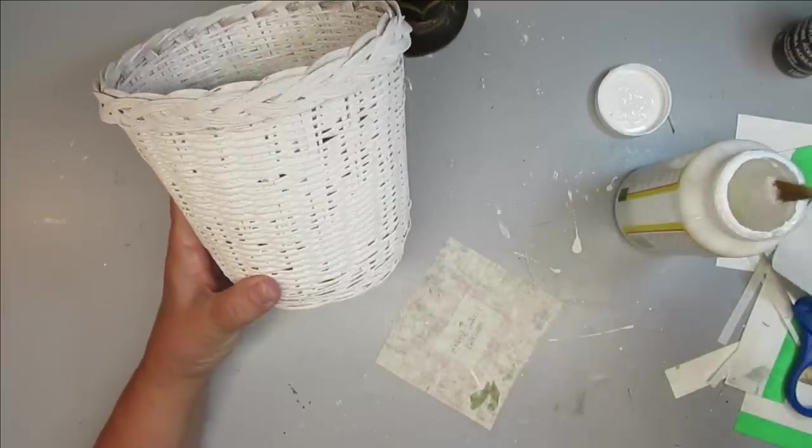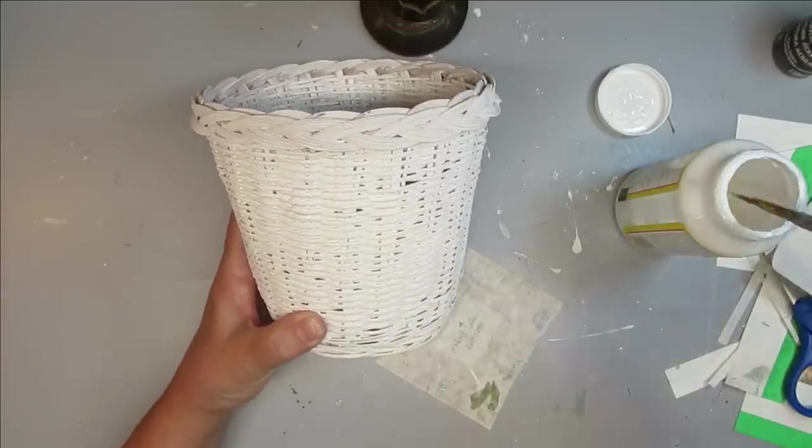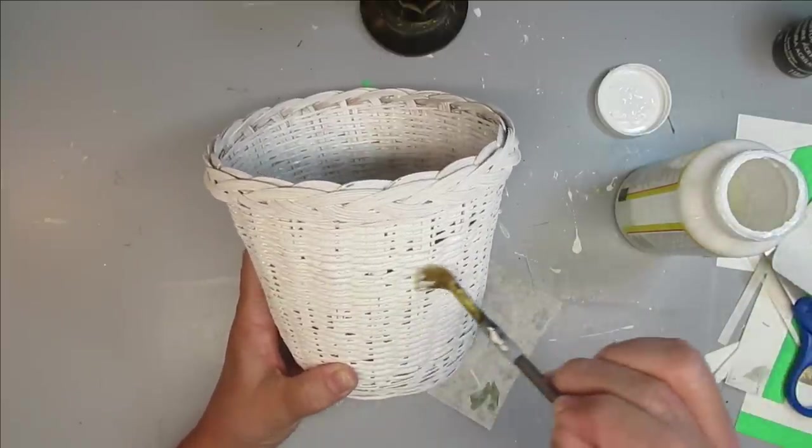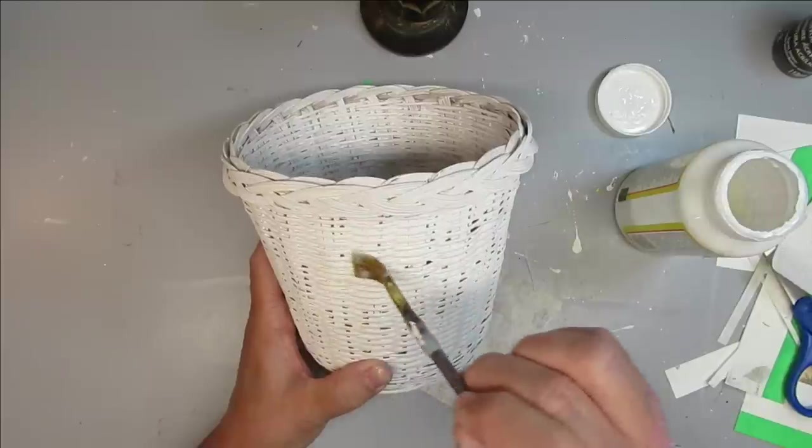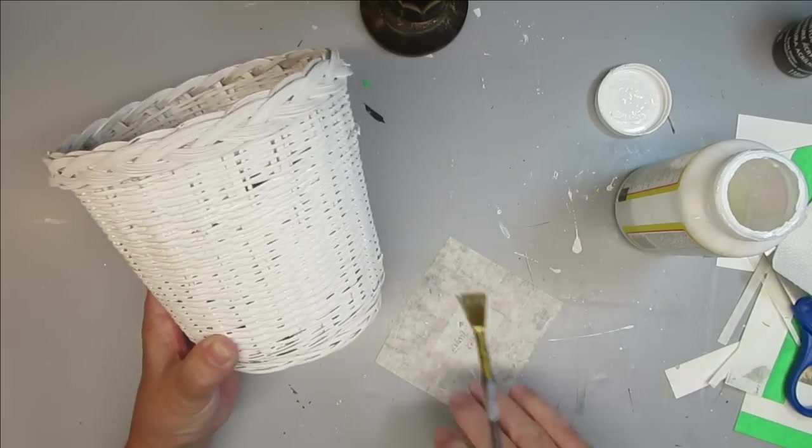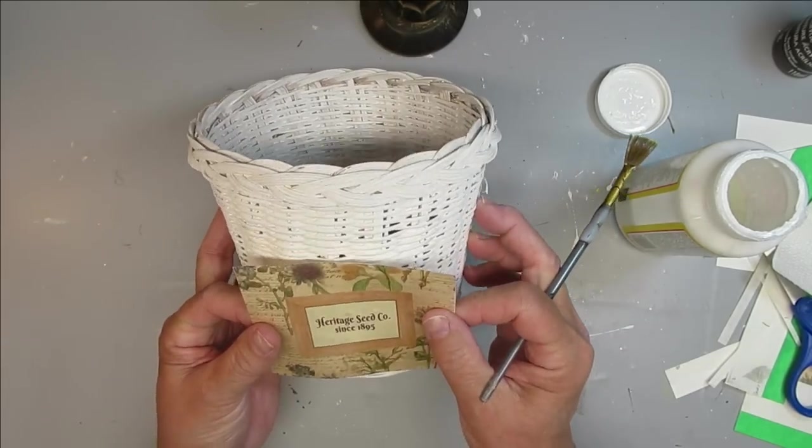If you haven't used rice paper before it is a really nice thing to print on. This one happened to have some little green leaves in it which I thought was okay and I'm going to be giving the basket quite a thick layer of Mod Podge because of all those little weaves in there. I want this to stick really well.